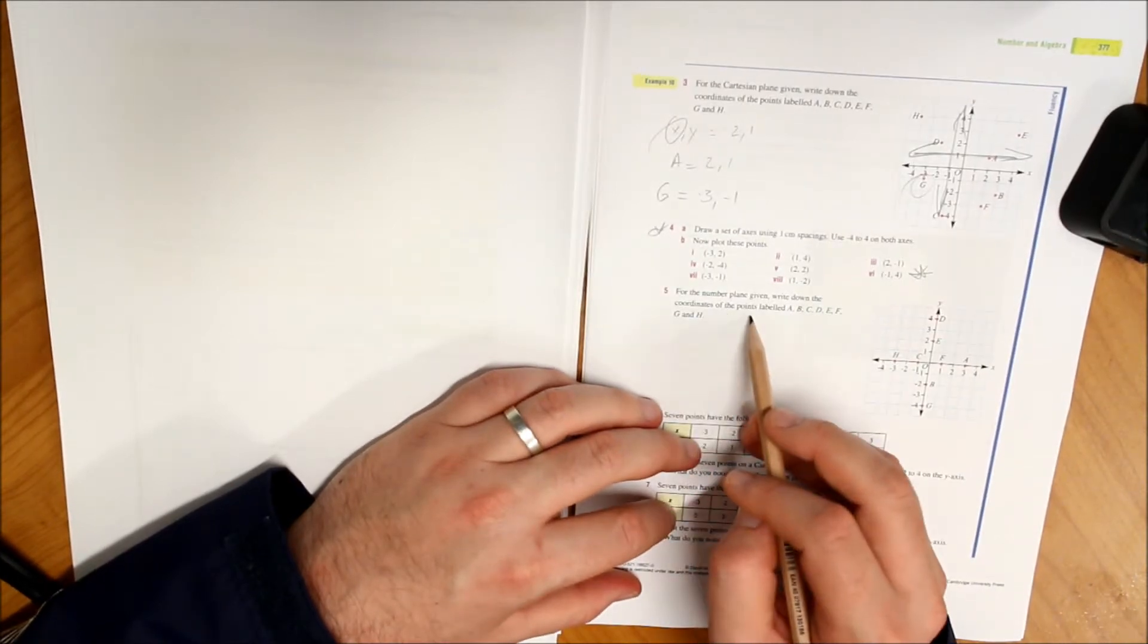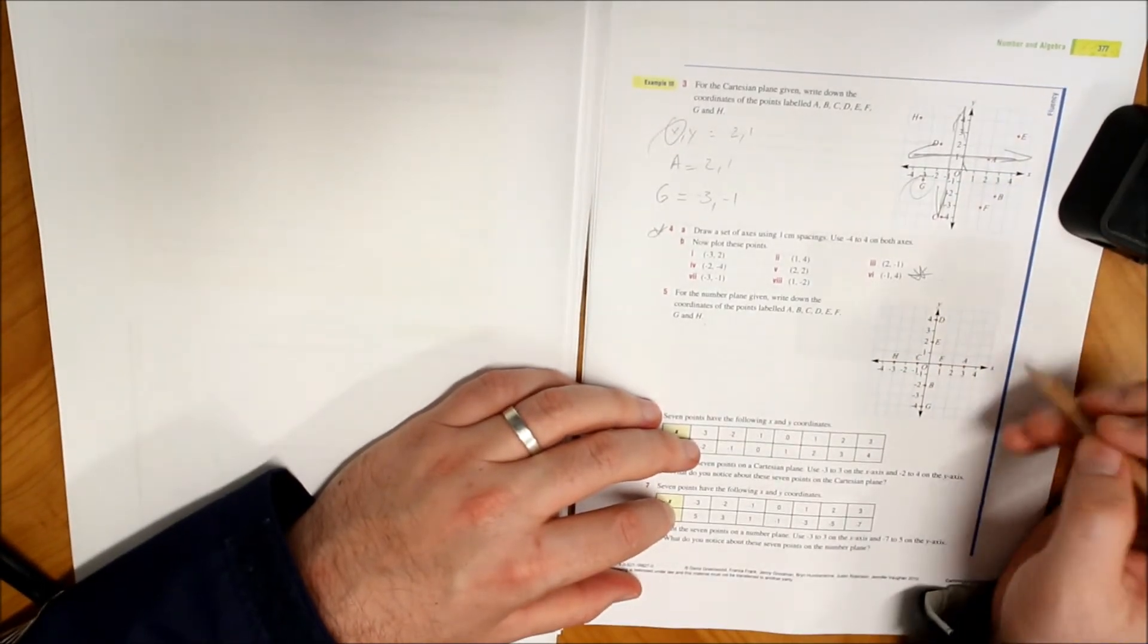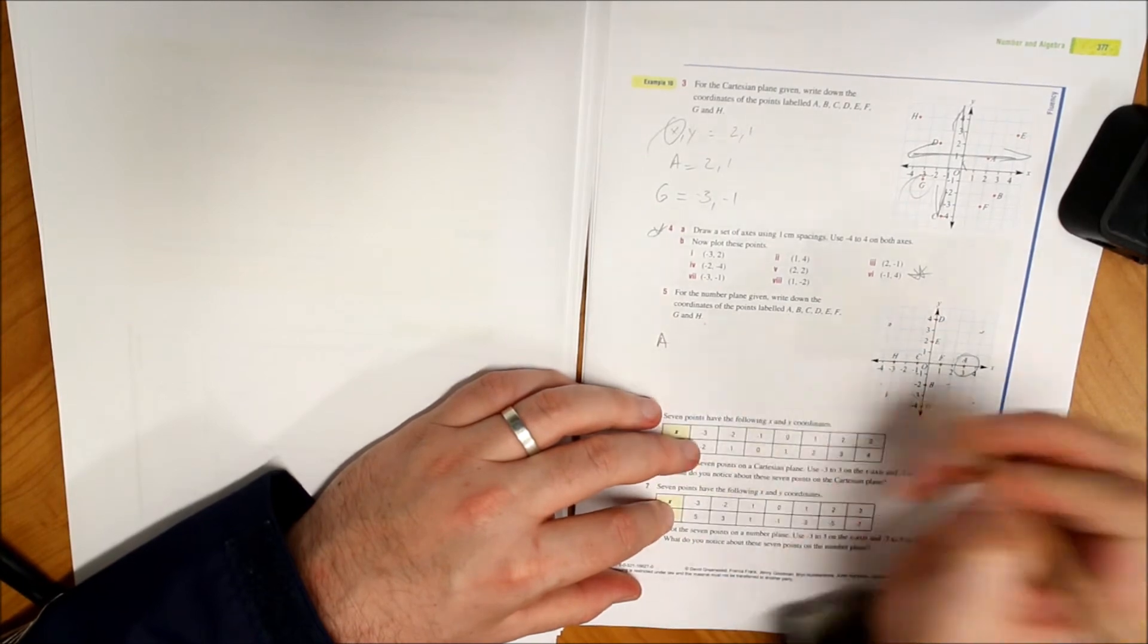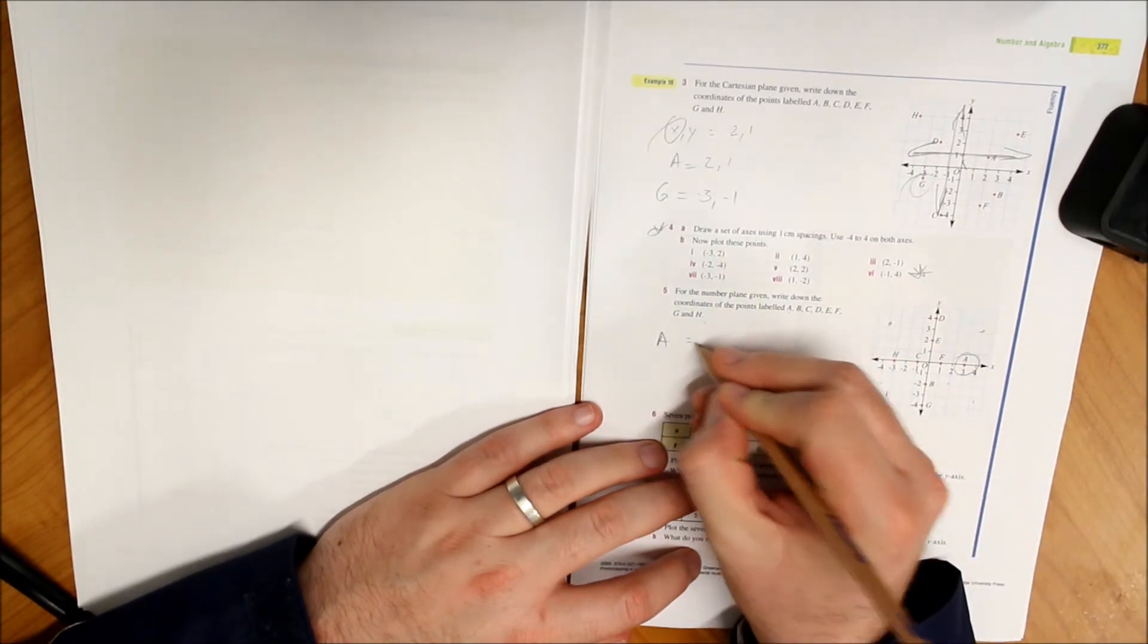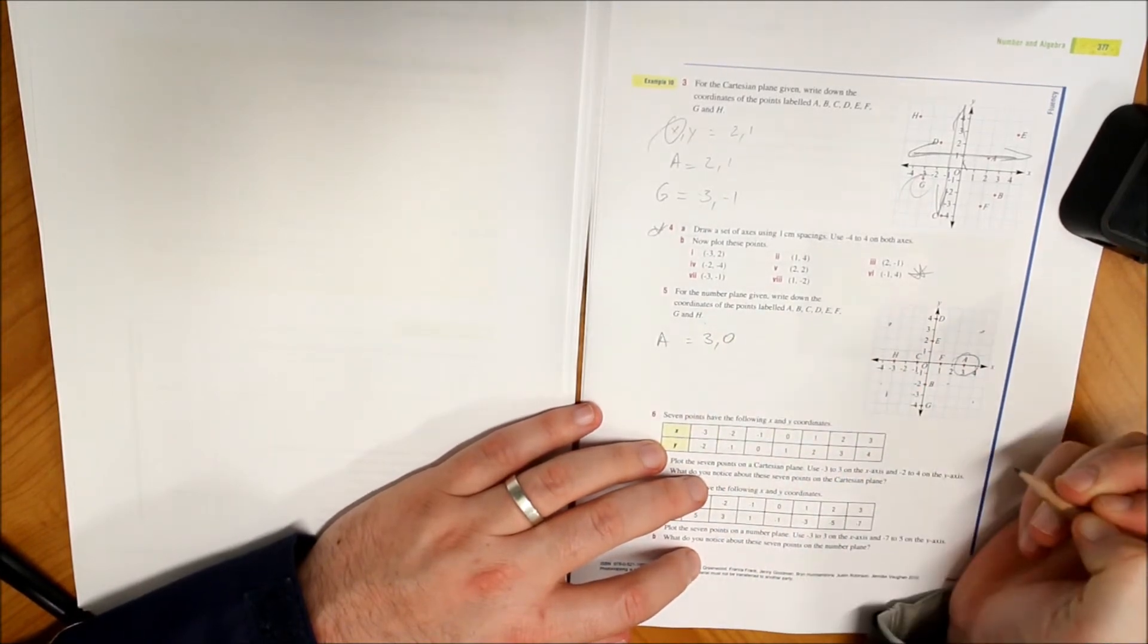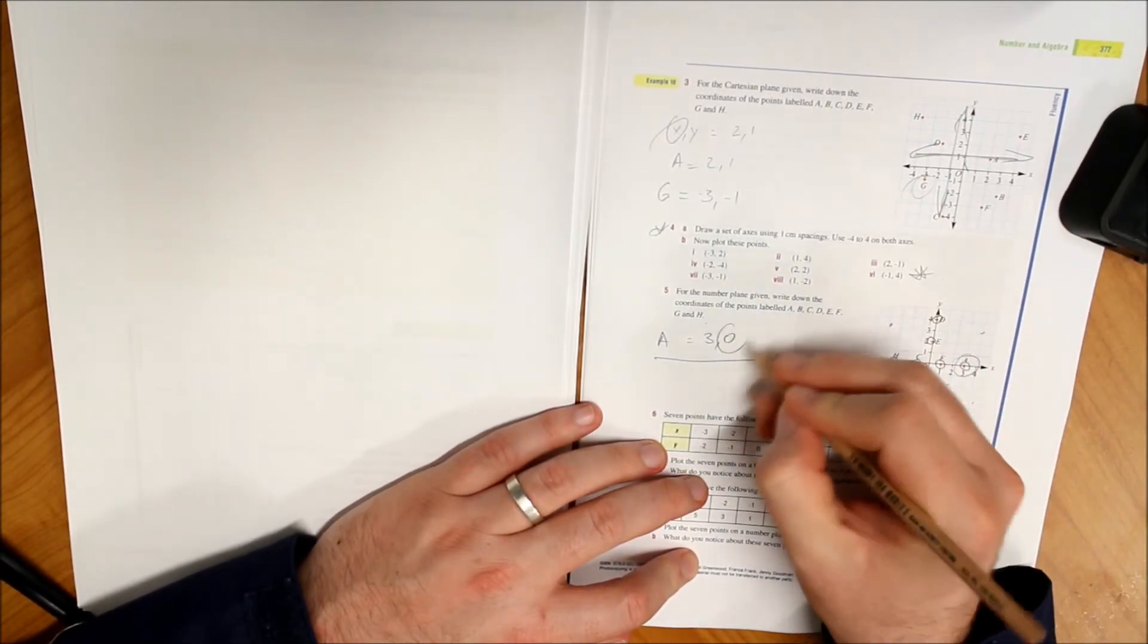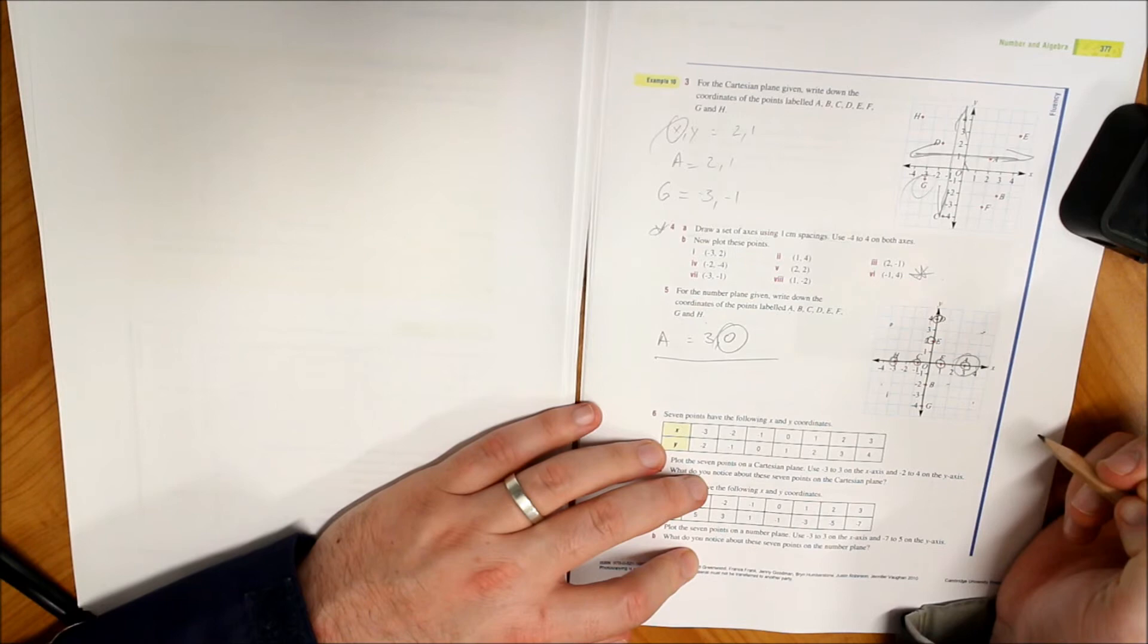For a number plane given, write down the coordinates of the points labeled A, B, C, D, E, F, G, and H. Okay, very similar to this one. However, instead of points being out here, okay, we've got them on the line. So let's have a look at A. In this case, A on the x-axis is three, all right, but on the y-axis it is zero. Okay, so in this case you can have points and coordinates sitting on that zero, which means that they're actually sitting on the line itself.